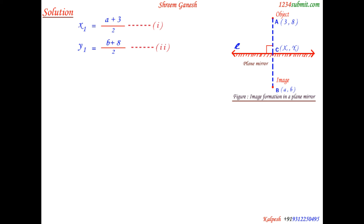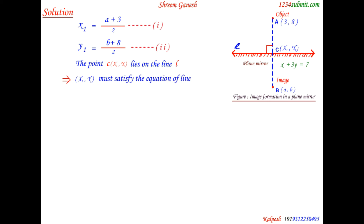Point C lies on the line L, which implies that the coordinates of point C satisfy the equation of line L. Since x1 and y1 are the coordinates of point C, and x + 3y = 7 is the equation of line L, x1 and y1 must satisfy it — mathematically, x1 + 3y1 = 7.